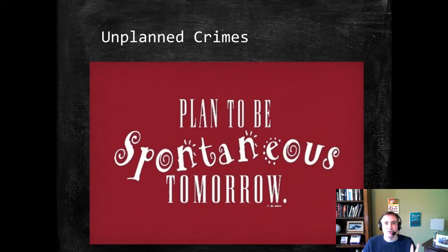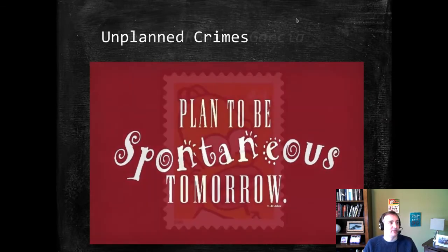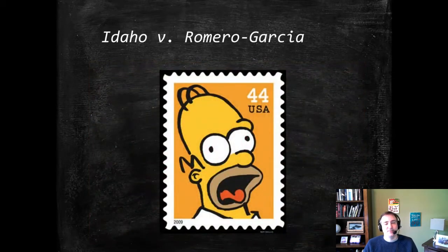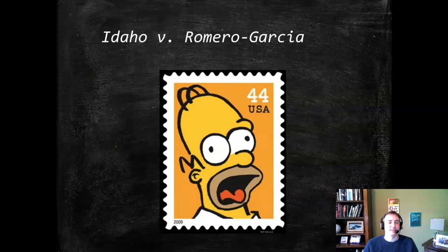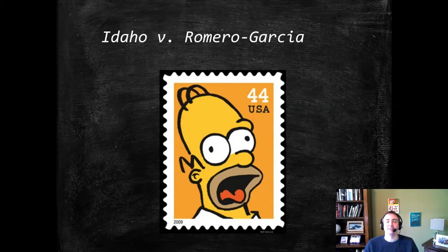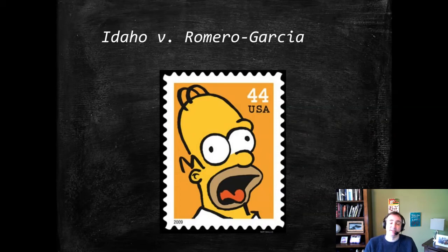The common law has two approaches here. The MPC drafters were not entirely clear in deciding which rule should apply. Let's start with how the common law deals with unplanned offenses. Idaho v. Romero Garcia is a goofy, ridiculous case involving a crime that many think should not exist: failure to affix drug stamps. Many states have these laws, including Kansas. They're kind of a piling-on charge — just another addition to a drug prosecution — and it carries its own penalty.